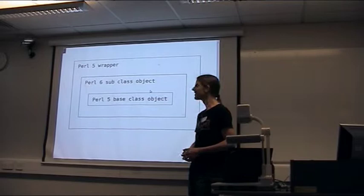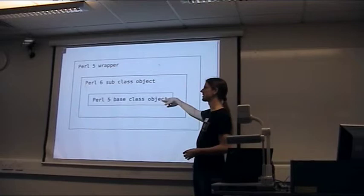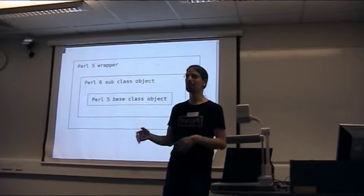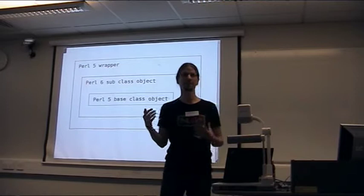If you call a method on an object of this class, it's either implemented by the class itself or delegated to the underlying Perl 5 object. In memory, we have the Perl 6 object containing the Perl 5 object of the base class. If you pass this Perl 6 object to Perl 5 code, it gets wrapped again in a Perl 5 wrapper class that delegates to the Perl 6 class, so the Perl 6 class can decide whether to handle the method itself or delegate it further.